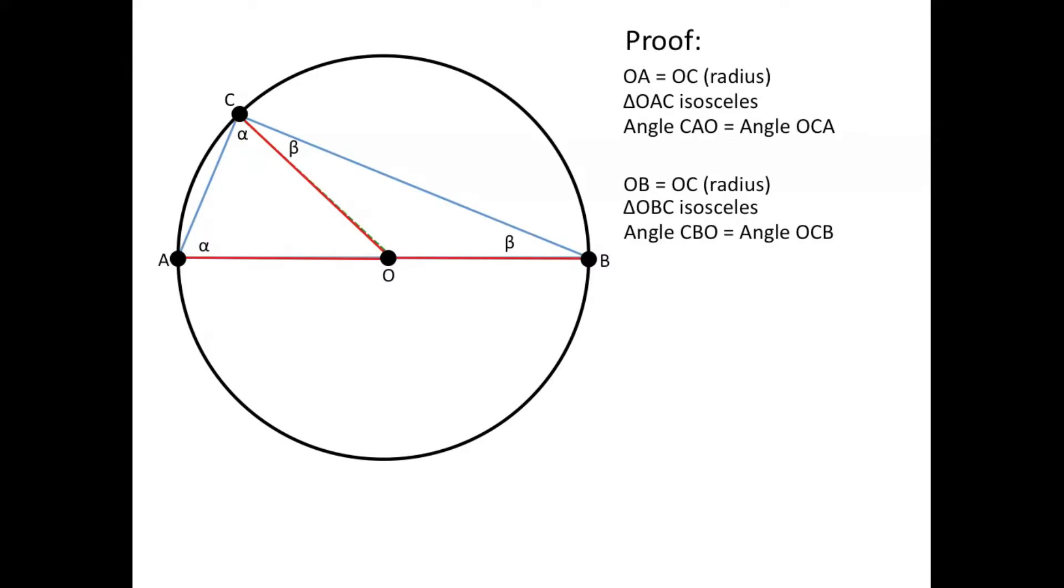Now we know that the sum of all the interior angles of a triangle add up to 180 degrees. So if we add up all the angles in the triangle ABC, then we'll end up with alpha plus alpha plus beta plus beta gives you 180 degrees. So if we simplify that we'll have 2 alpha plus 2 beta is equal to 180 degrees.